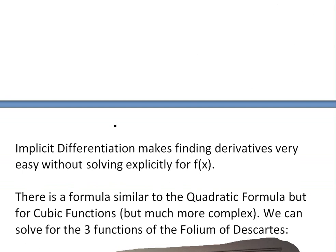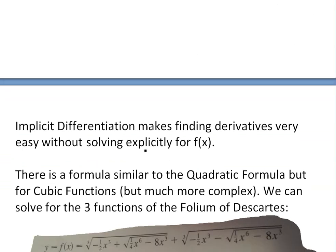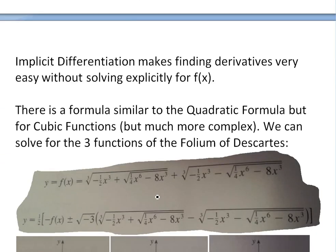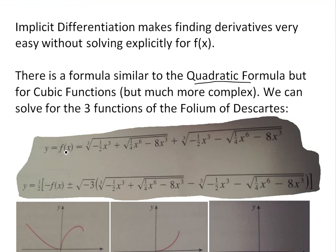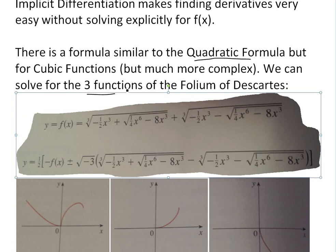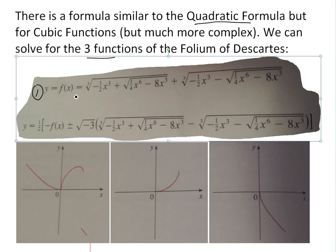This example basically shows that implicit differentiation makes finding derivatives very easy without actually solving explicitly for f of x. My calculus book notes that for cubic functions there's actually a formula similar to the quadratic formula, but it's much more complex. So if you didn't have implicit differentiation, you would have to solve for y, or f of x, for the folium of Descartes — and there are actually three functions for every cubic equation. If you were to apply that formula — which I haven't written here because it's really complex — the first equation would involve huge numbers with cube roots, square roots, and powers of 6, and the second and third include the first one with a plus or minus.